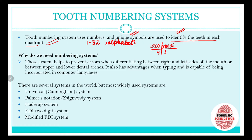The question arises: why do we need this system? These systems help to prevent errors when differentiating between the right and left side of the mouth, or the upper and lower side of the mouth. Basically, to prevent any kind of confusion as to what tooth a person is referring to, these systems have been developed. These are fixed notations so people can easily differentiate between different teeth. They also have the advantage of being usable when typing and can be incorporated into computer languages.